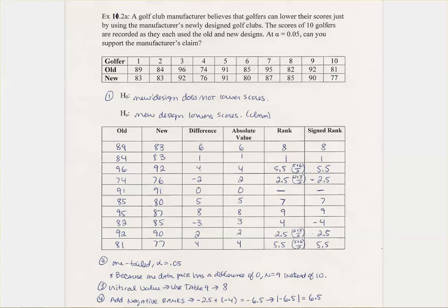So to start out with, you want to go ahead, find your null hypothesis, your alternative hypothesis. So null: new design does not lower scores. Alternative: new design does lower scores, that's your claim. Obviously it's a good thing, you want lower scores.